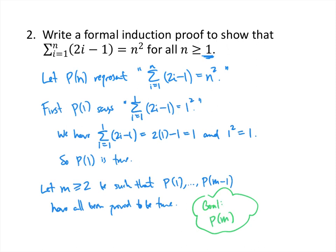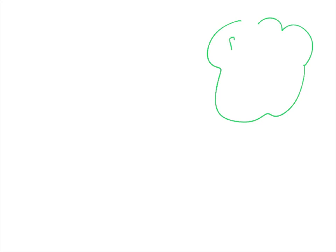If we can prove P of m, we'll be done by the principle of mathematical induction. P of m says that the sum as i goes from 1 to m of 2i minus 1 should equal m squared. So we start with the left-hand side of that equation and try to turn it into the right-hand side.